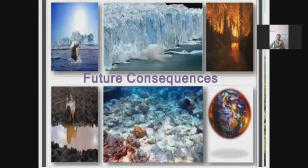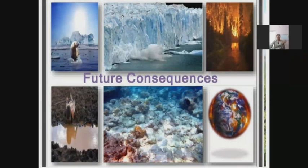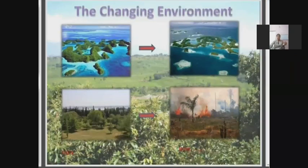Coming to the future consequences, you can see pictures related to them: polar ice caps will be melting, forest fires, drought, and many aquatic life organisms will be adversely affected — as a whole, the earth will be burning. Another future consequence is a changing environment, with the rise in temperature being the main issue, as you can see in this slide.